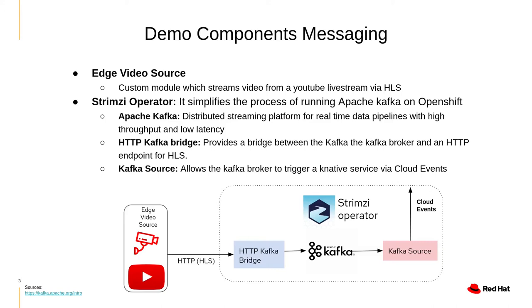We also deployed two other Kafka pieces: an HTTP Kafka bridge that takes in HLS — HTTP live streaming data — from our simulated edge video source, which is simply pulling video from a YouTube live stream, specifically one in Jackson Hole, Wyoming, and sending it to the Kafka bridge. The other piece was a Kafka Knative source that allows us to connect our Kafka messaging system to a Knative serverless service.